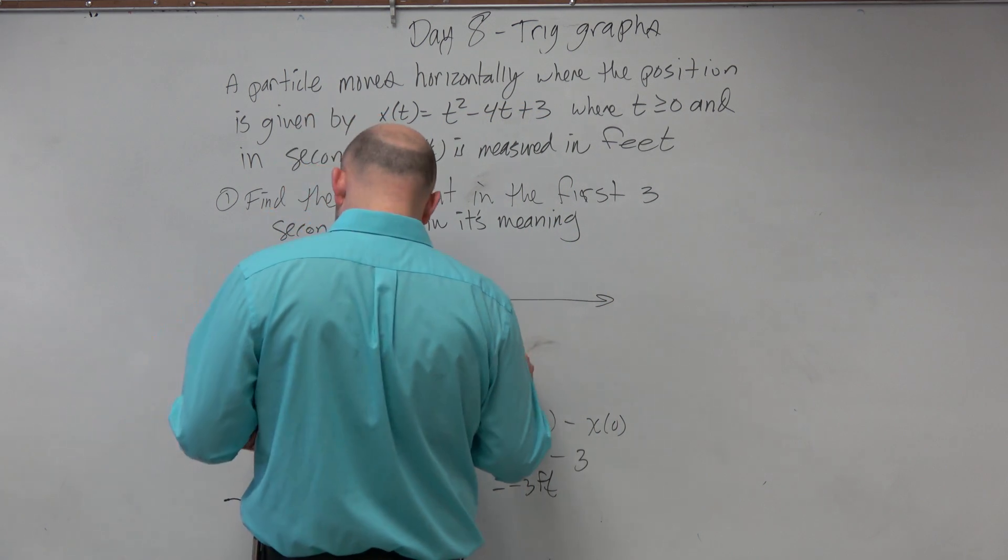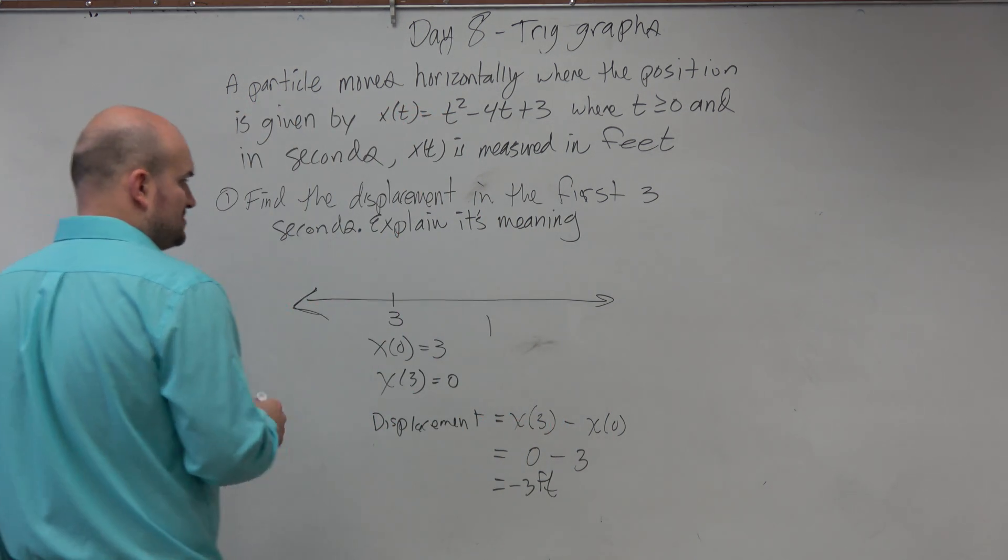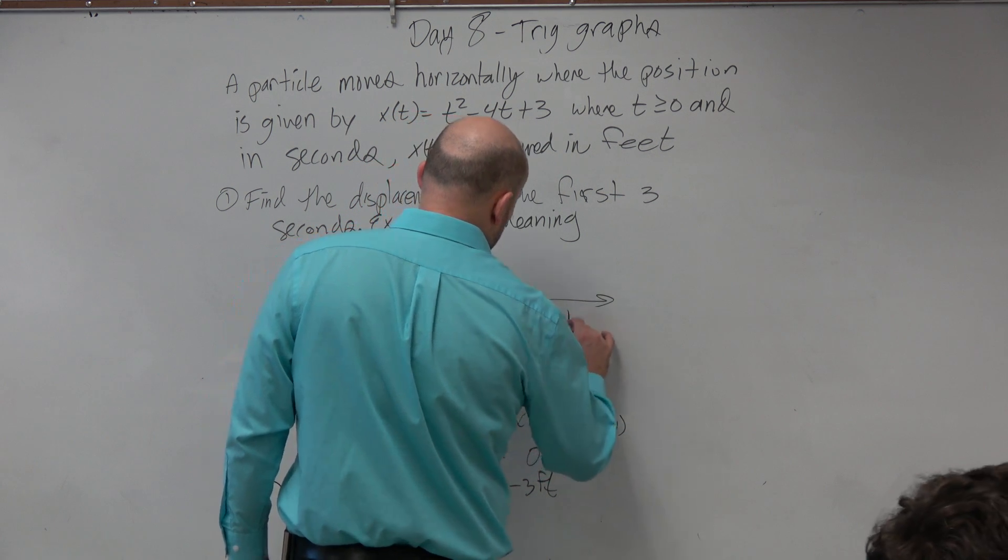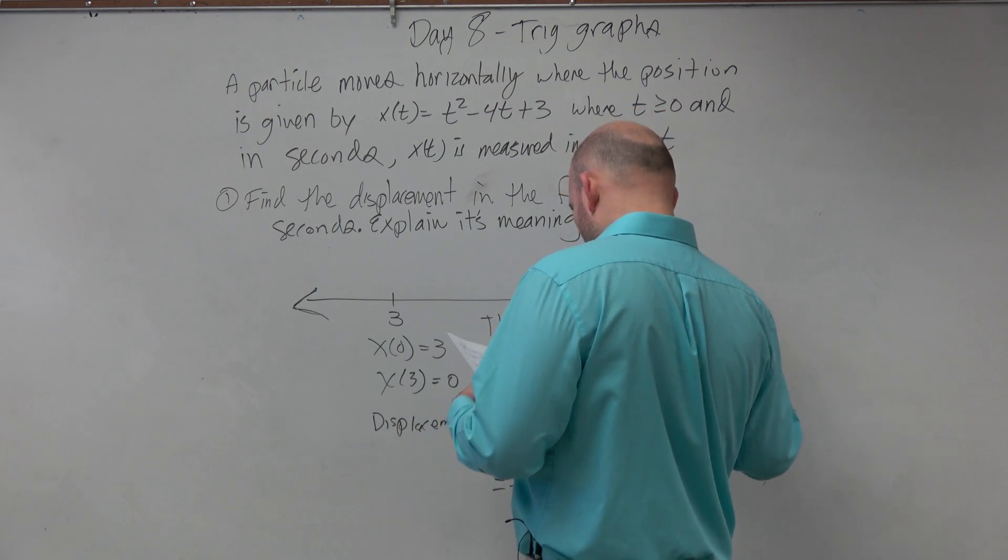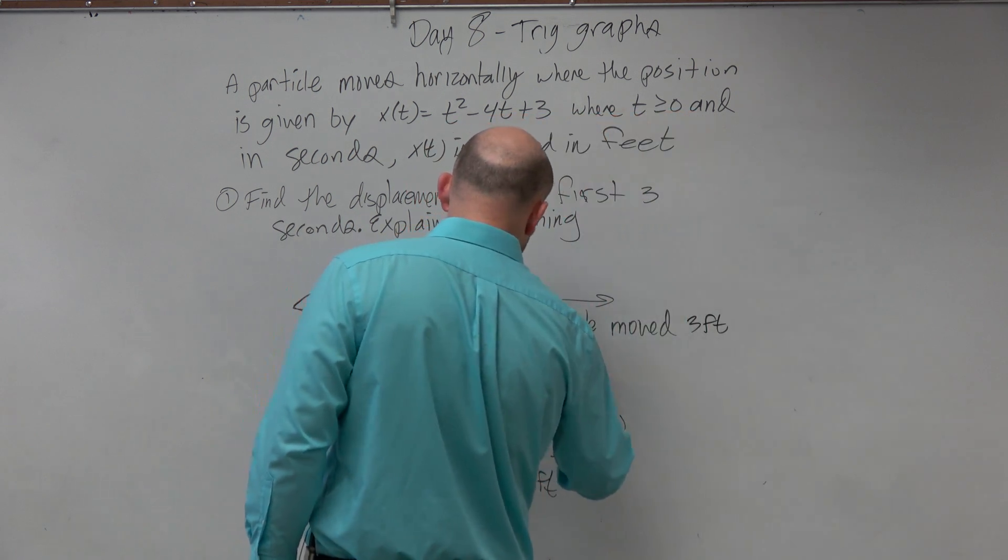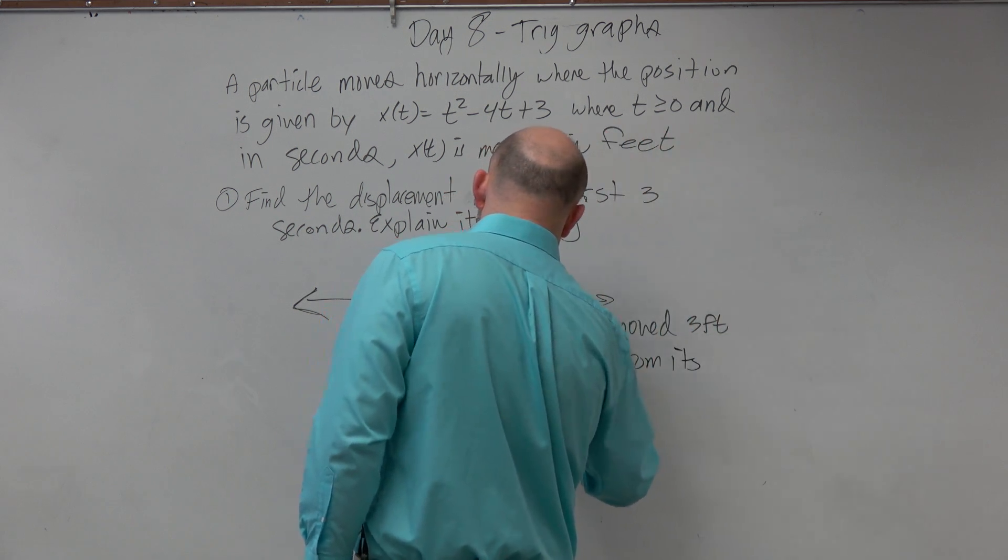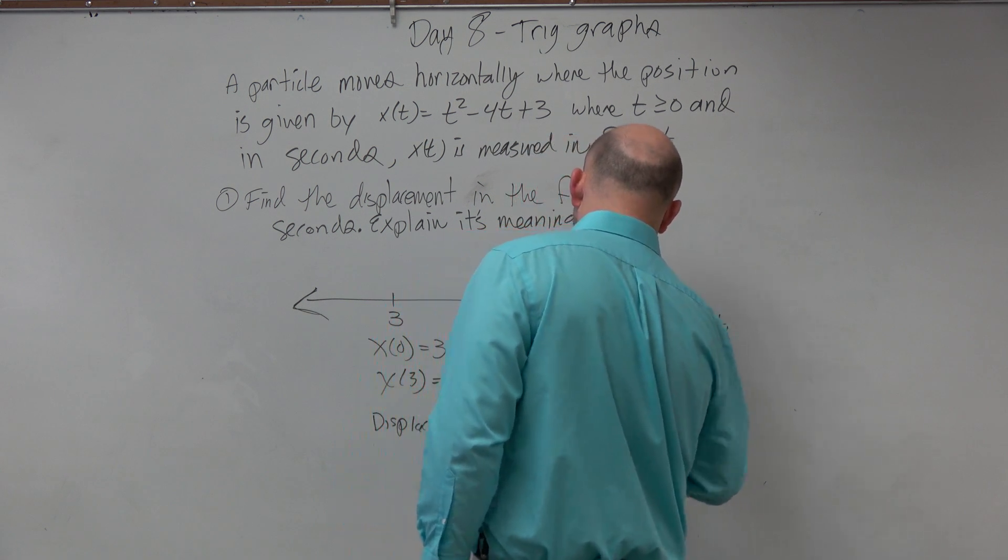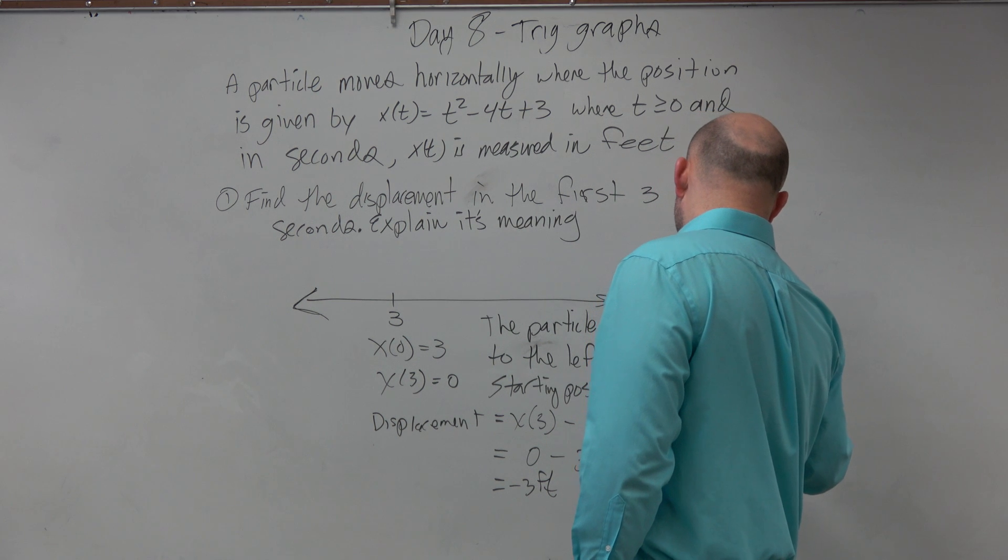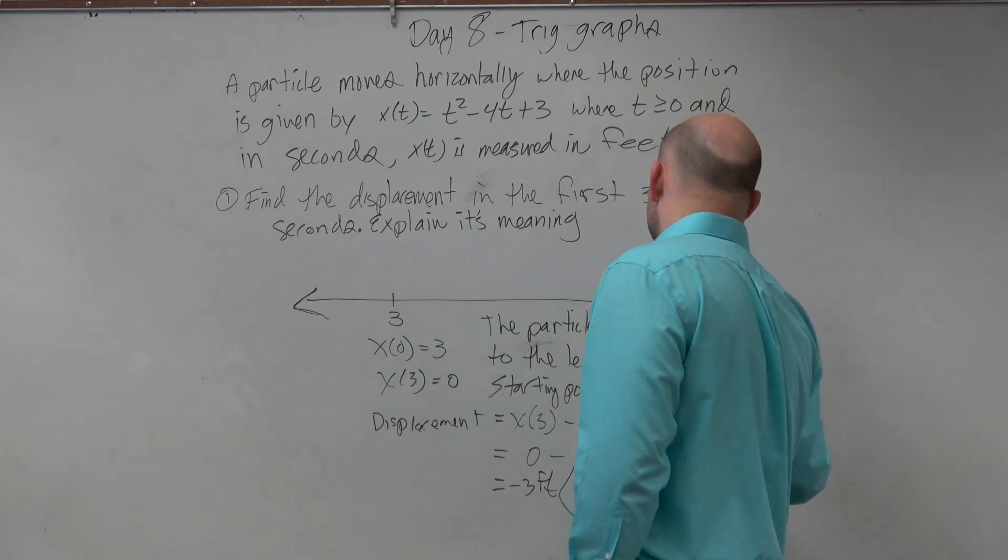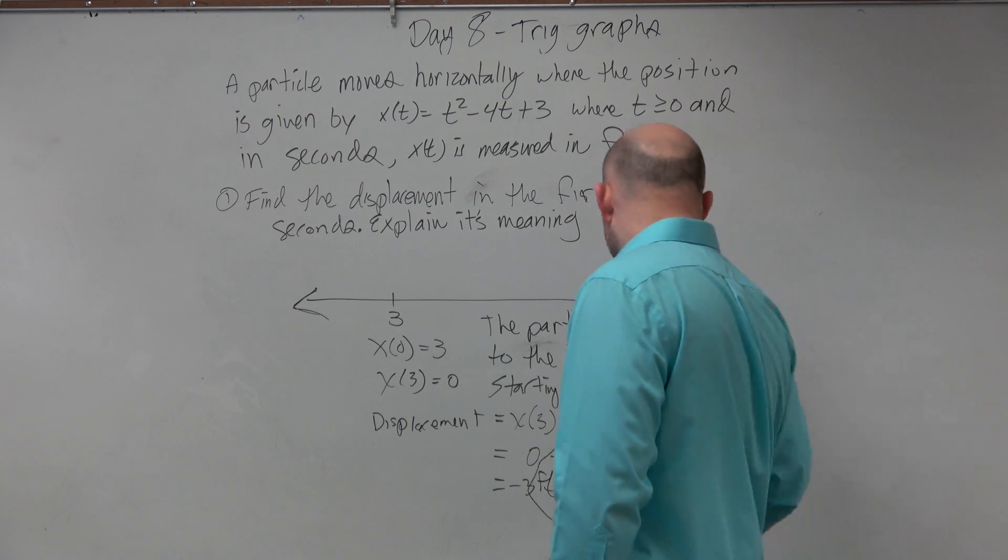So what I would say is, in the first 3 seconds, explain. The particle moved 3 feet to the left from its starting position. Because we could say the starting position here is at 3, right? And then you could say, on the interval, 0 which is less than or equal to t, which is less than or equal to 3.